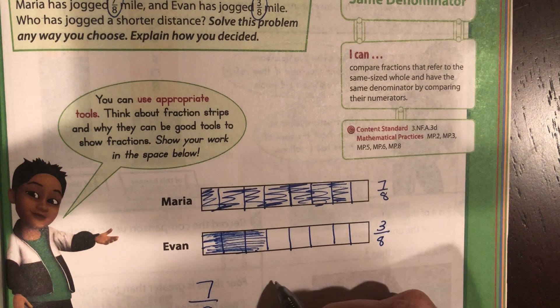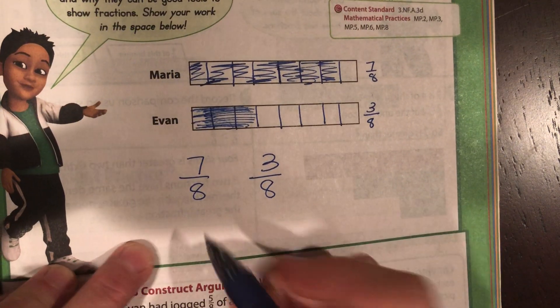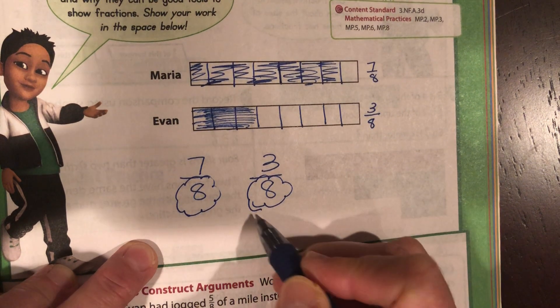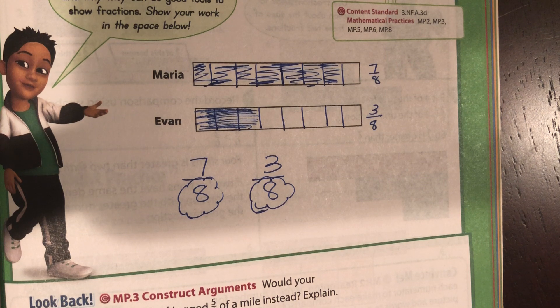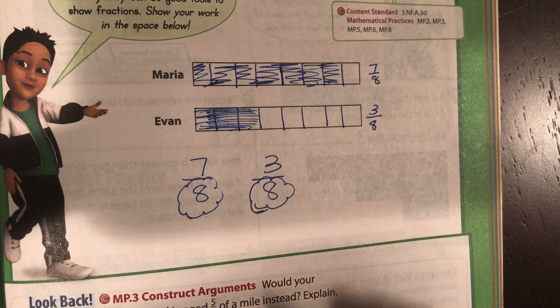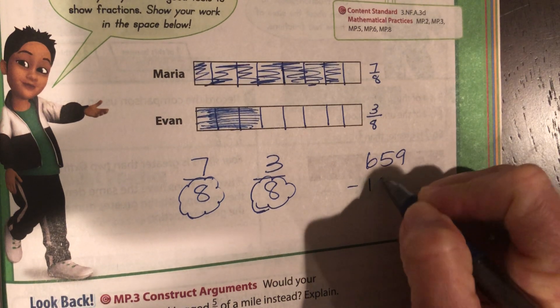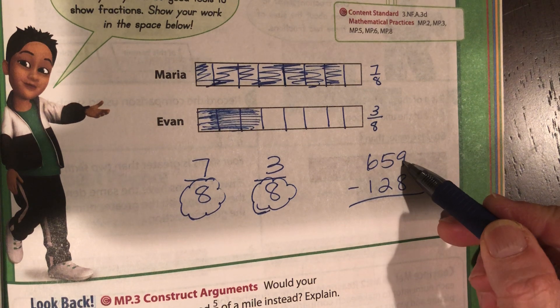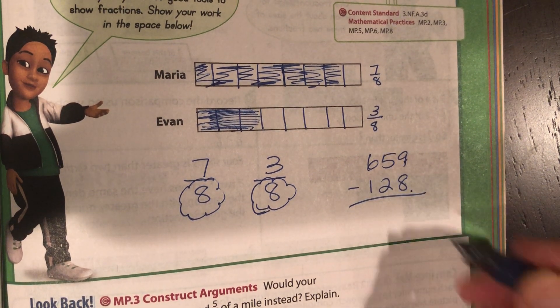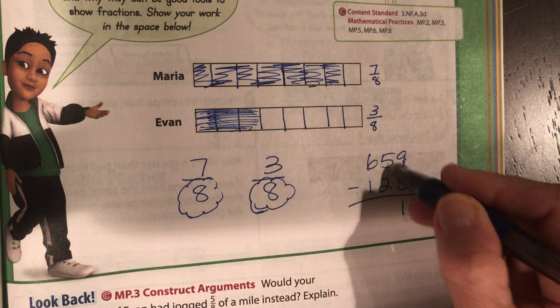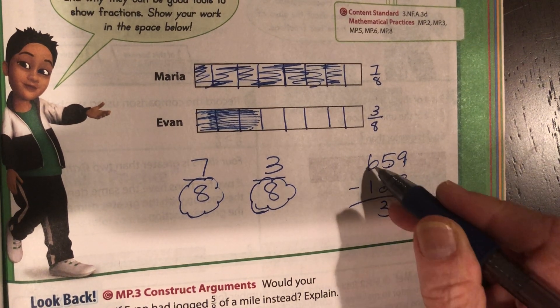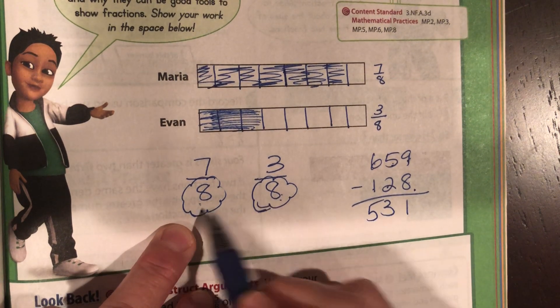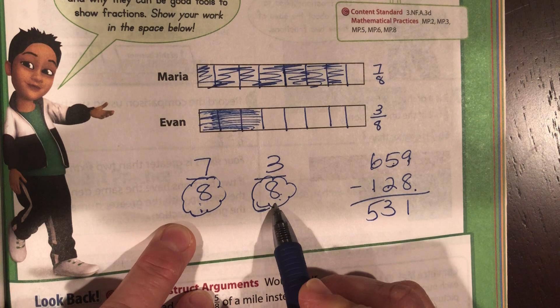Let's take a look here. We have seven-eighths compared to three-eighths. When our denominator is the same, our life is so easy. This is like when you're doing subtraction and you have more on the top, no need to stop. Nine minus eight, I don't need to regroup. Five minus three, more on the top, no need to stop. When your denominators are the same, you are in easy-peasy lemon squeezy land.